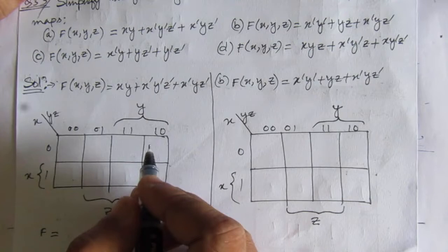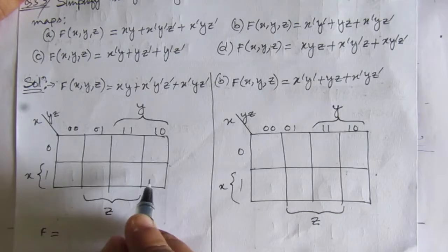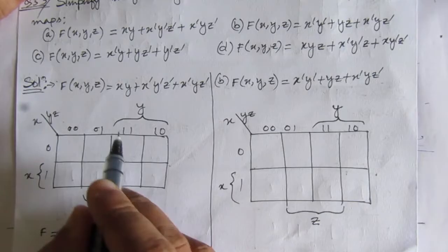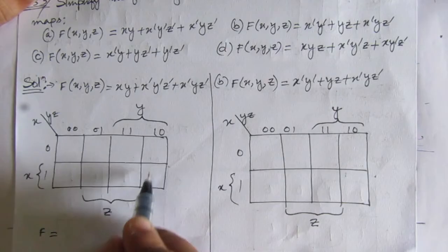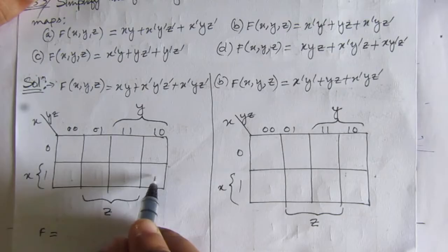We have to put 1 values for the boxes common to these two columns and this row. For the term xy: x is 1 for the complete row and y is 1 for these two columns. The common boxes are these two, so we put 1 here.